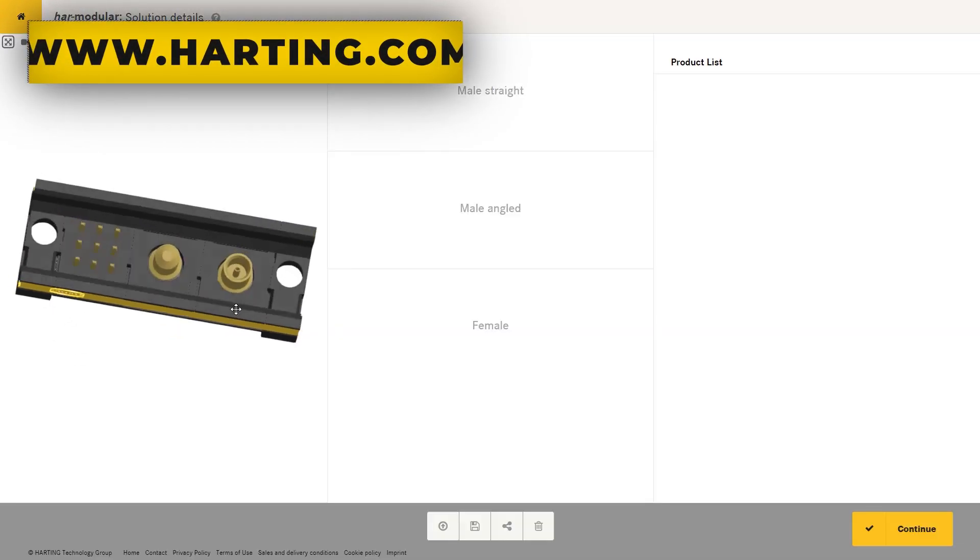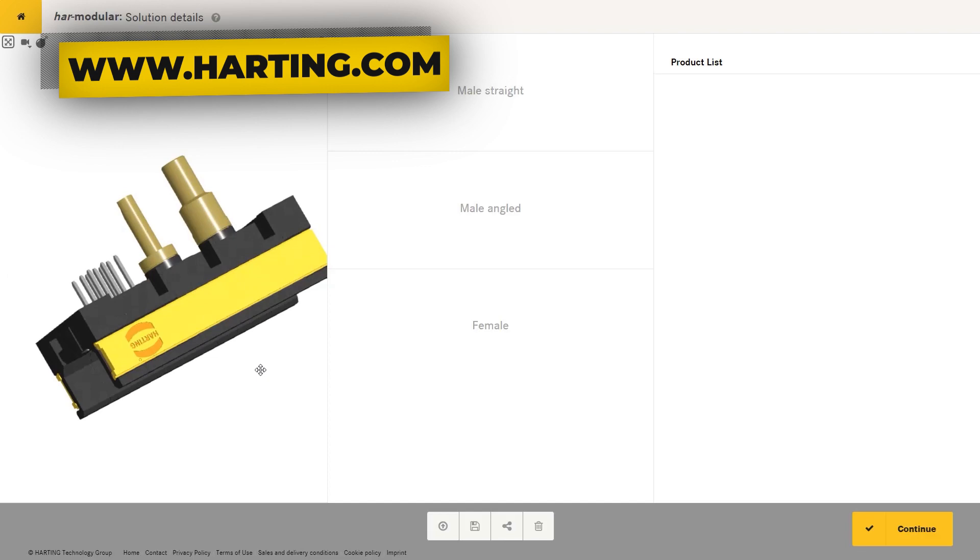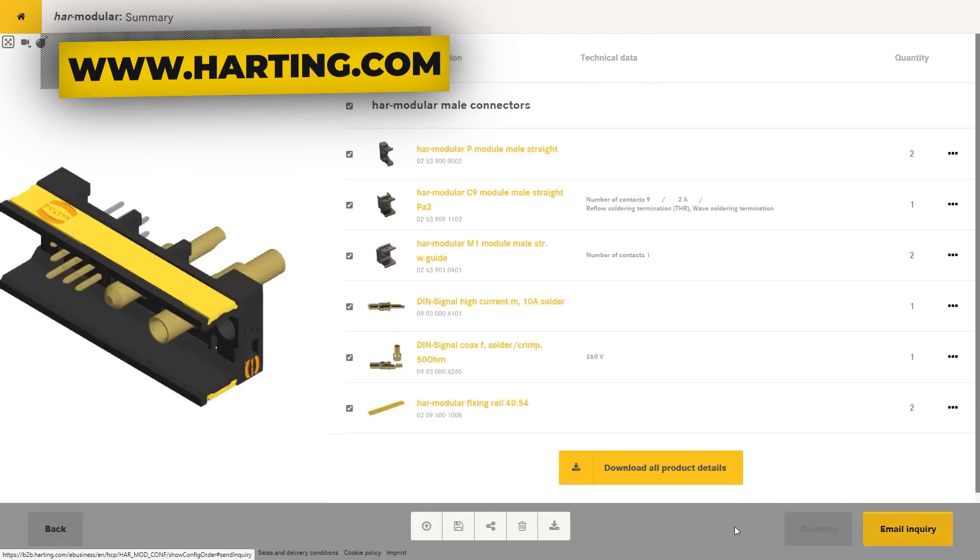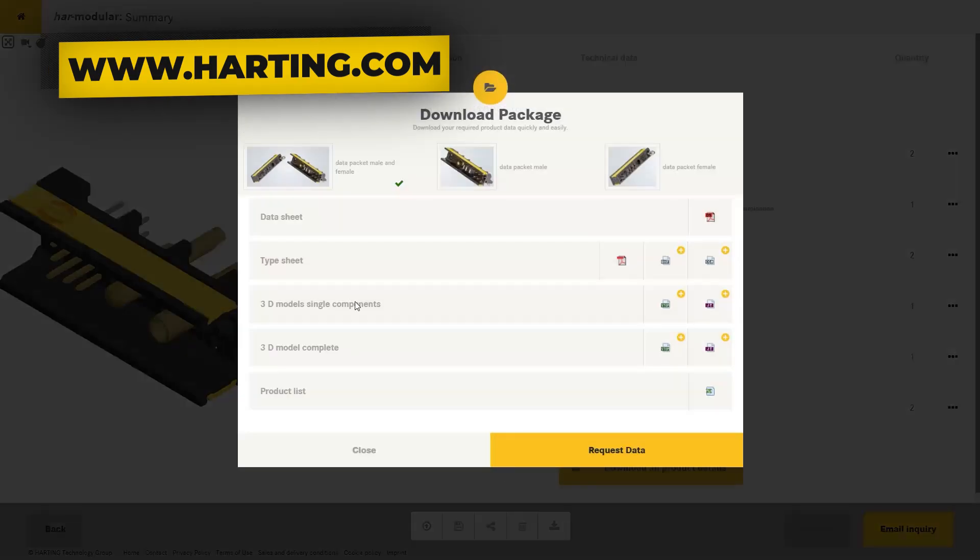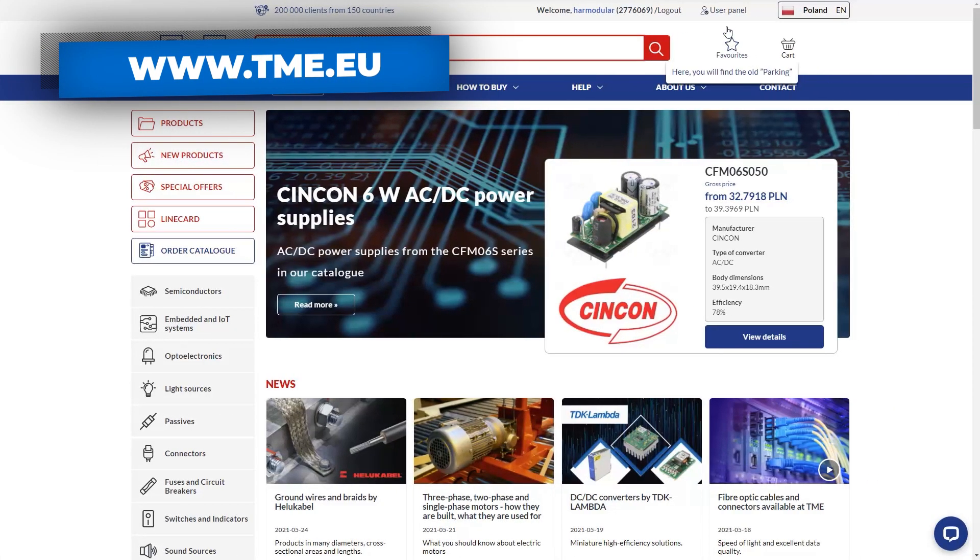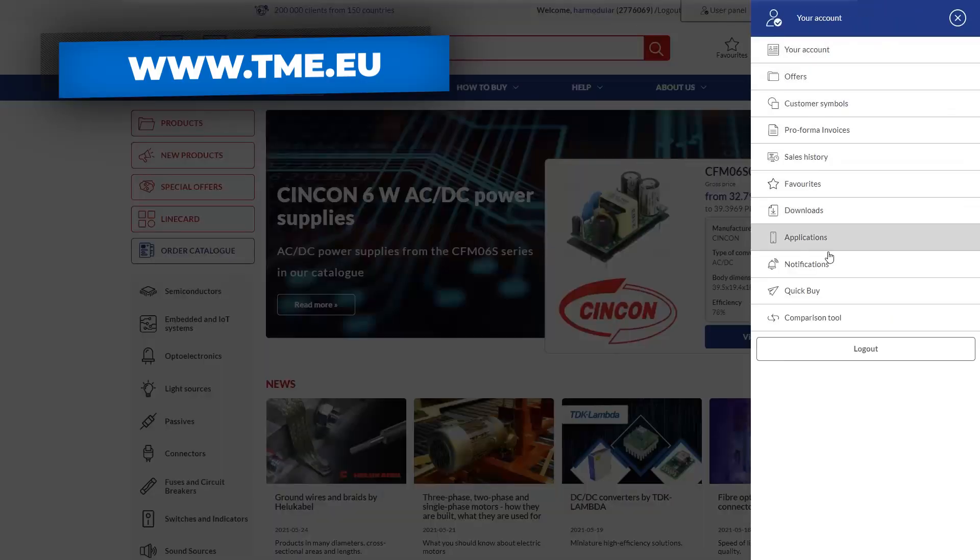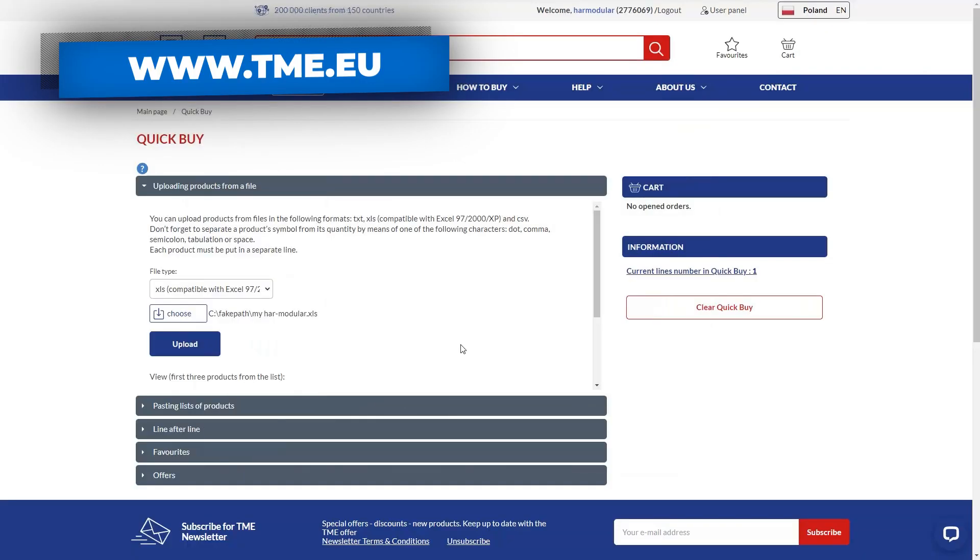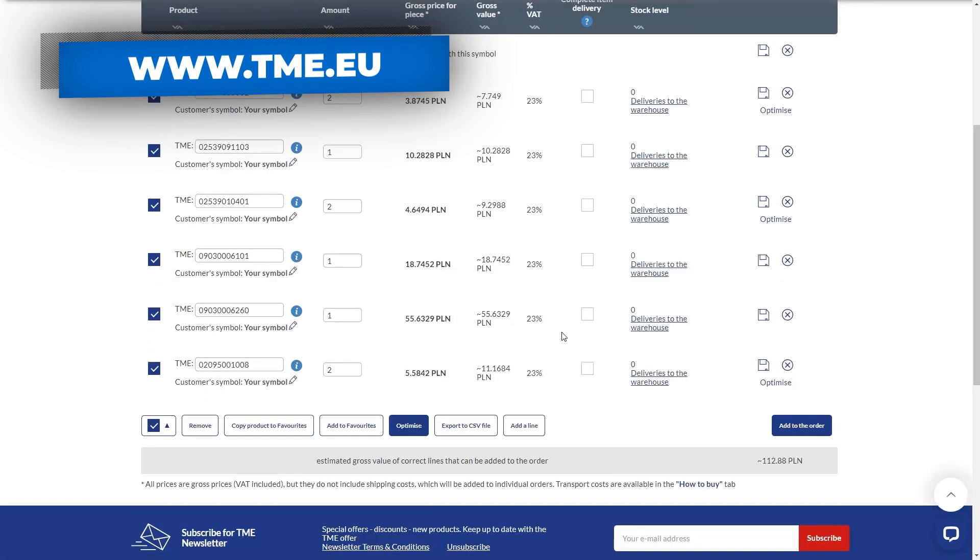To build your own connector, Harting has an online configurator where you can design the connector according to your needs. And then you can download the documentation including the bill of materials. With this, you go to the TME website and with the quick buy feature, you simply upload the file and place the order. You don't need to enter the symbols one by one.